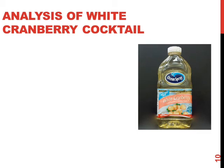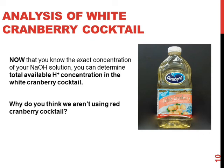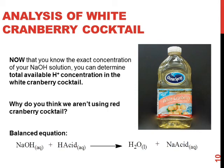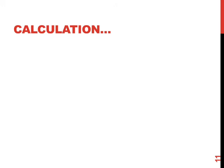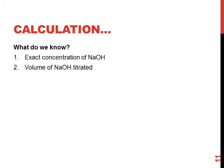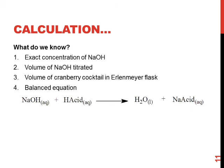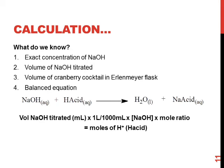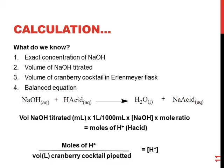Now you are ready to analyze the acidity of the white cranberry cocktail. Why do you think we are using white cranberry cocktail rather than red? Think about the indicator you are using — what color does it turn? Here is the balanced equation that you will be using. We know the exact concentration of NaOH in our secondary standard, the volume of NaOH titrated, the volume of cranberry cocktail in our Erlenmeyer flask, and the balanced equation. Using this equation, we can easily calculate the moles of hydrogen atoms, then divide by the volume of cranberry cocktail pipetted to get the concentration of hydrogen atoms — also known as the acidity of the cranberry cocktail.